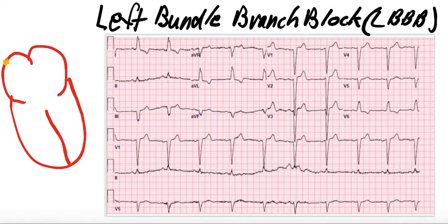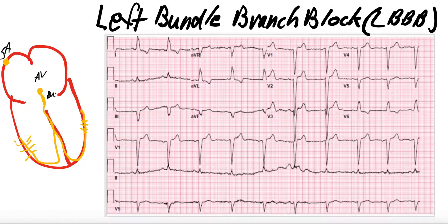Conduction system, just quickly: we'll have an SA node here, then an AV node. Then we'll have a single bundle of His, and then you'll have your right bundle branch that comes out into your Purkinje fibers. And then you'll have your left bundle branch coming out this way into your Purkinje fibers.